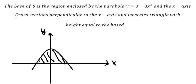We know that the cross sections should be isosceles triangles and the height equals to the base. For example, I will use the red color to highlight, so we can see that this is the base and the height should look like this.